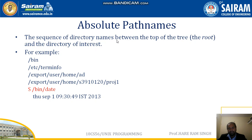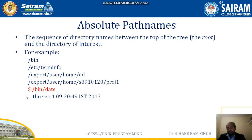An absolute path name is the sequence of directory names from the top of the tree to the directory of interest. For example: /bin, /etc, /usr/home/ad, and /usr/home/s3910120. An absolute path starts with the root directory, and the entire location from root to the end is given. For example, /bin/date — since date is present in the bin subdirectory under root, this is called an absolute path name.